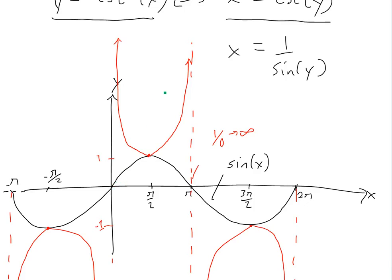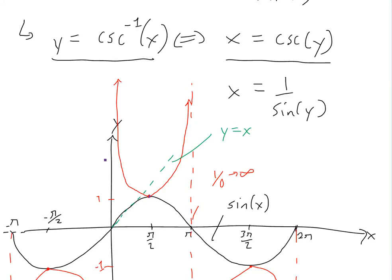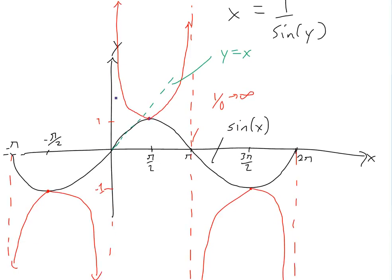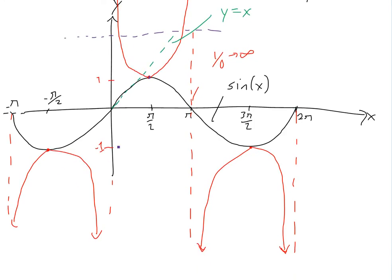Now to graph the inverse of cosecant, recall from my earlier video on inverse functions that it's the reflection over the y = x line — all we're doing is switching x and y. But first, for the inverse to be a function, we have to check the one-to-one condition using the horizontal line test. We need to select a domain where every x value gives only one y value.